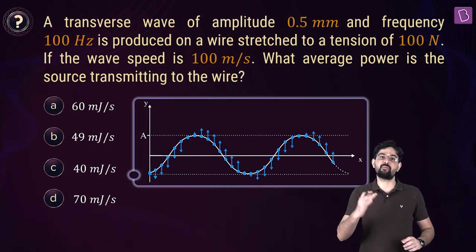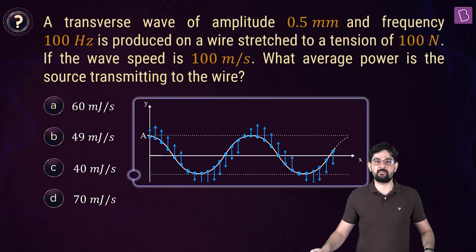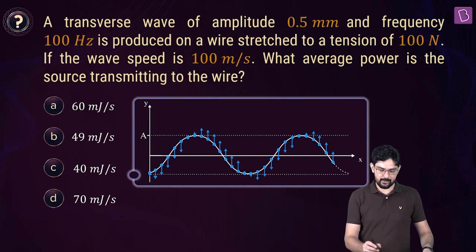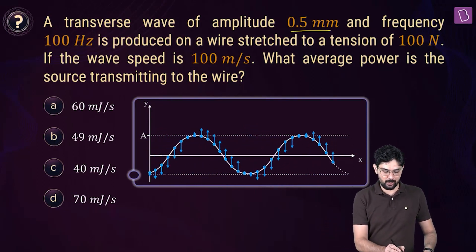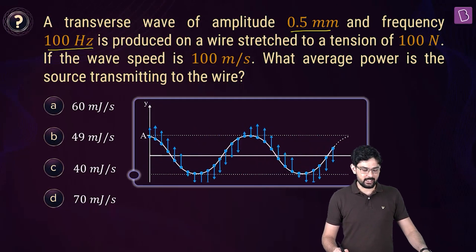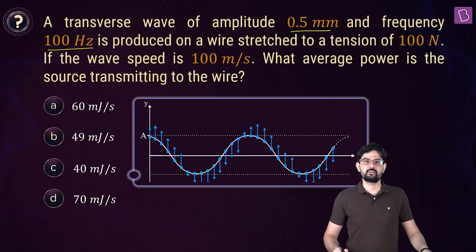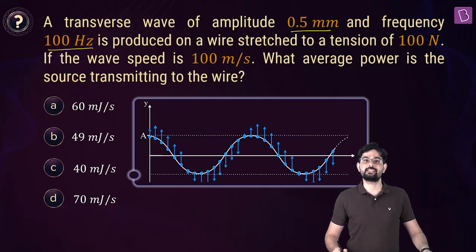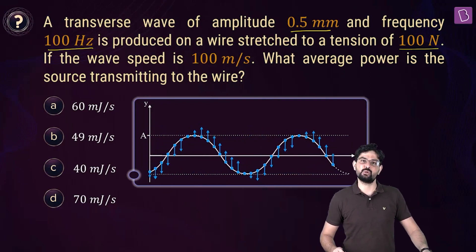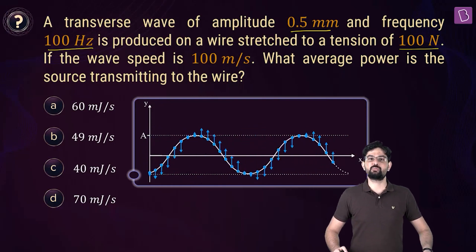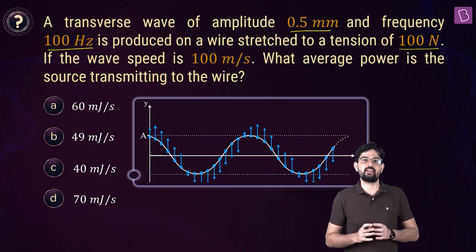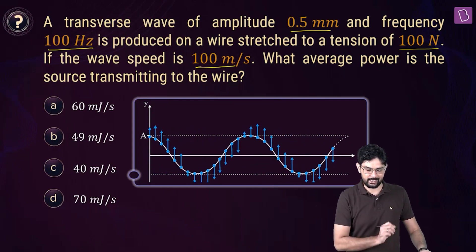Let's find out the average power transmitted by this transverse wave, which has an amplitude of 0.5 mm, frequency of 100 Hz, and the tension on the wire on which this wave is set up is given as 100 N. It has also been given that the speed of this transverse wave is 100 m per second.